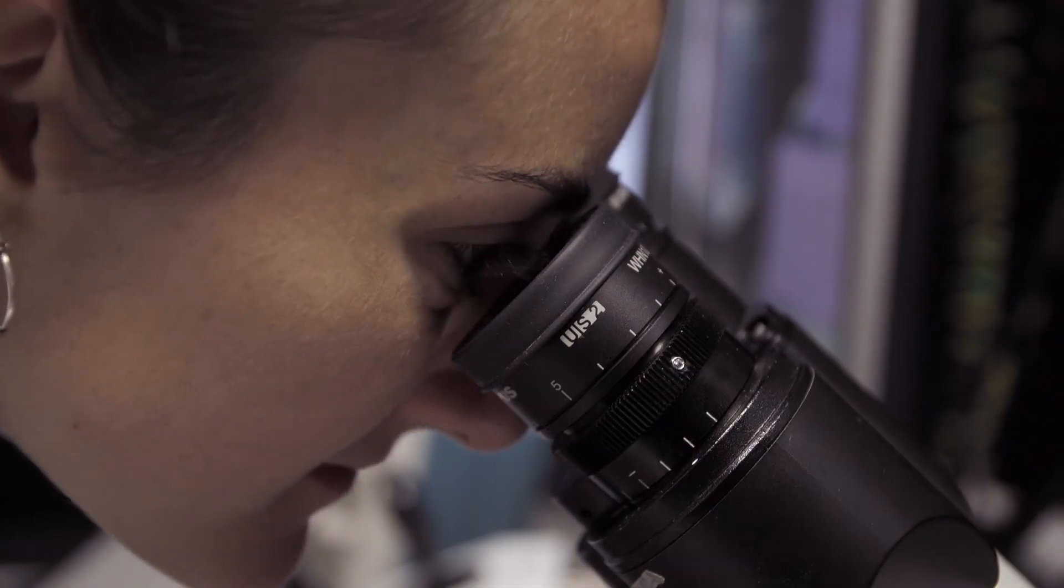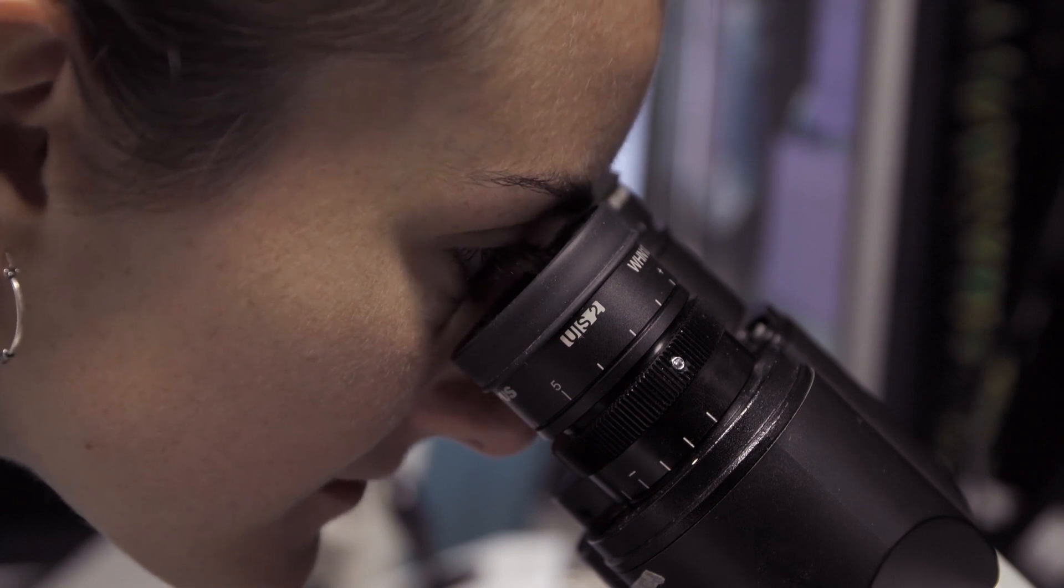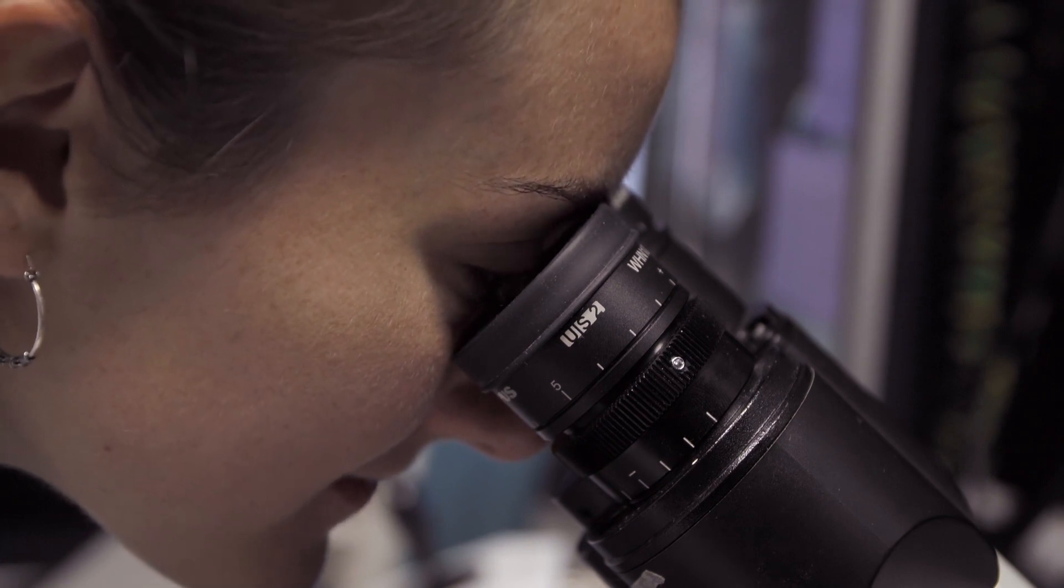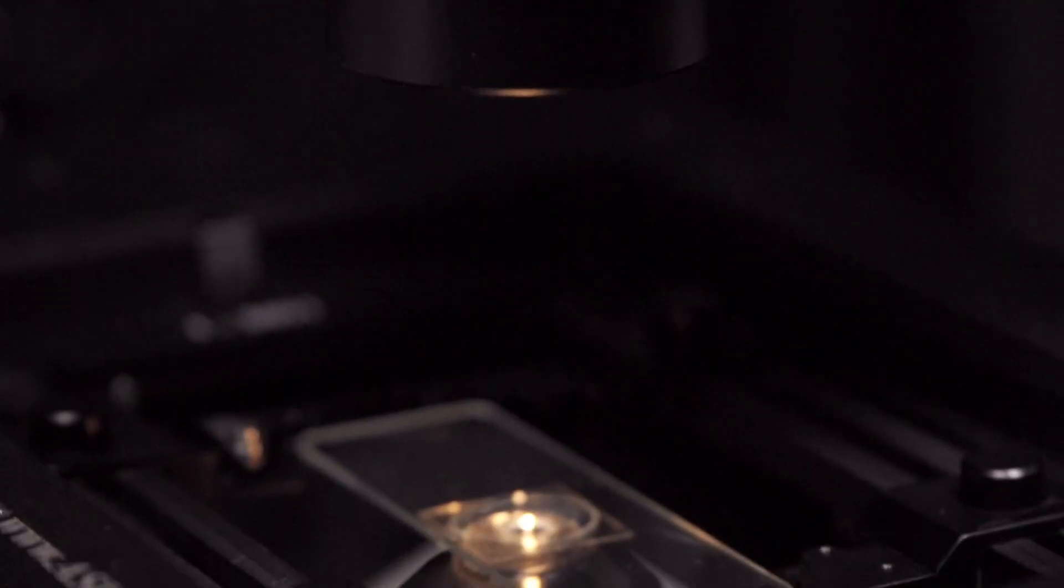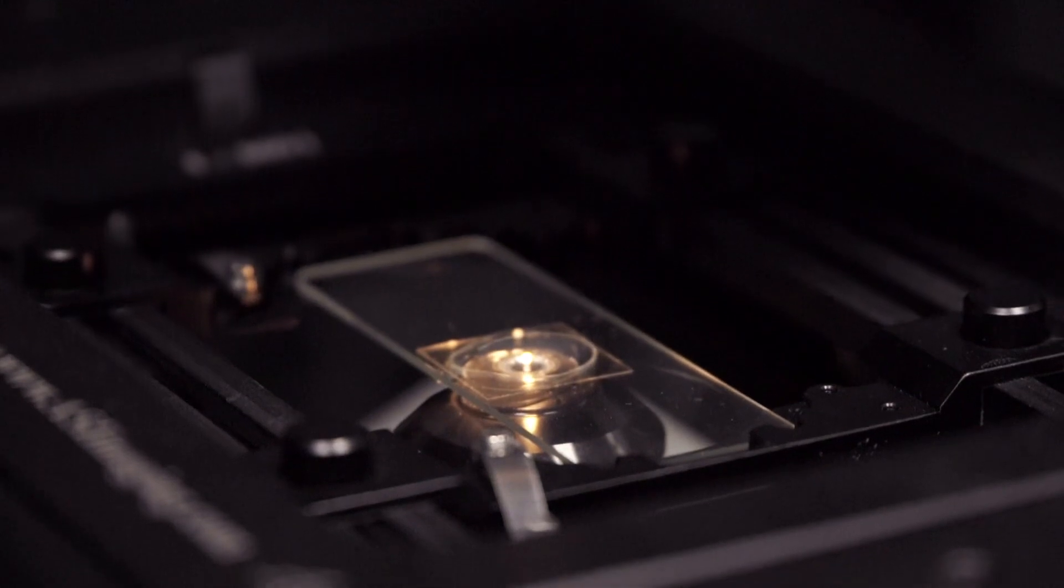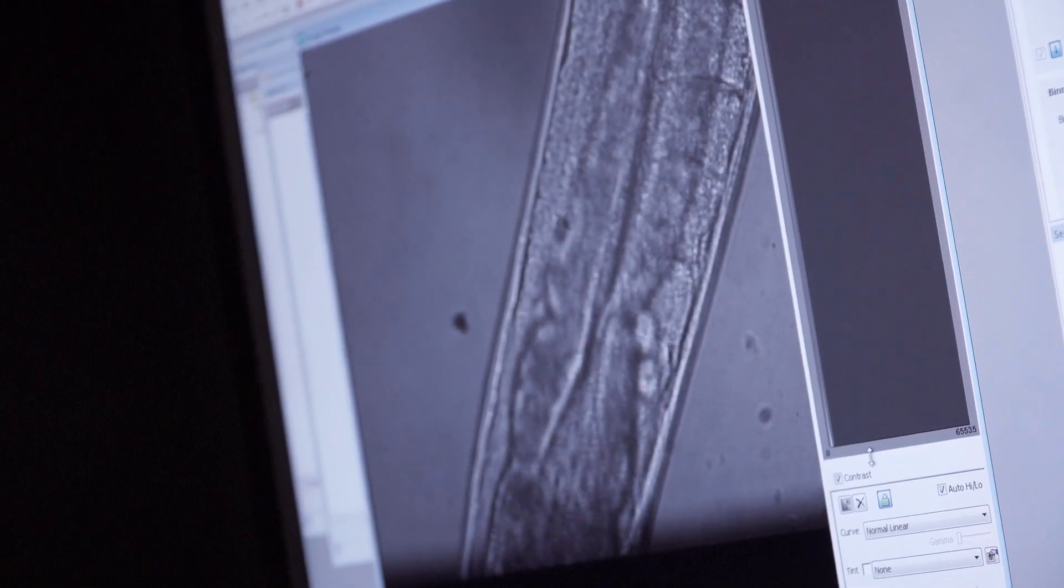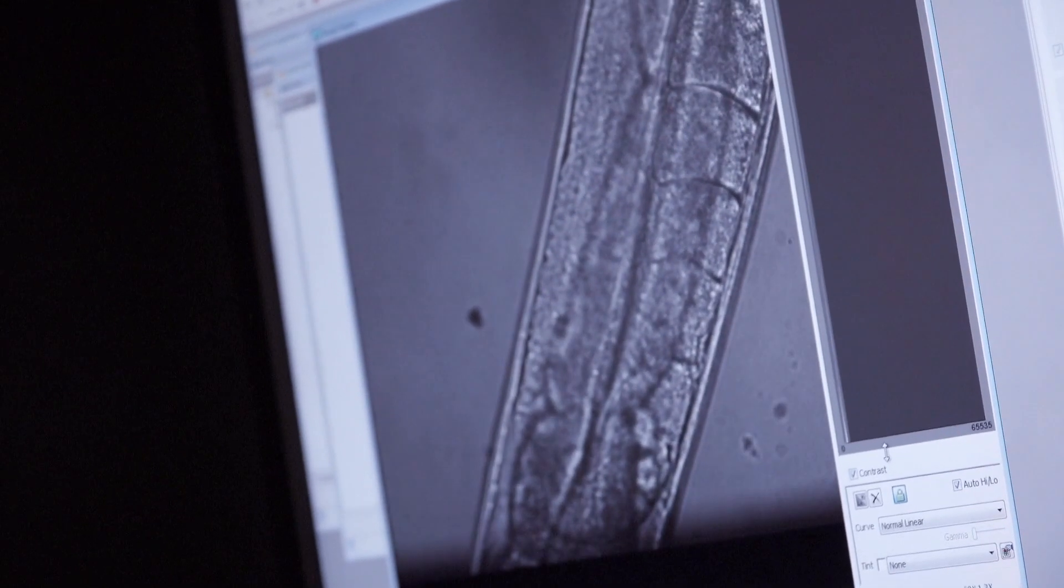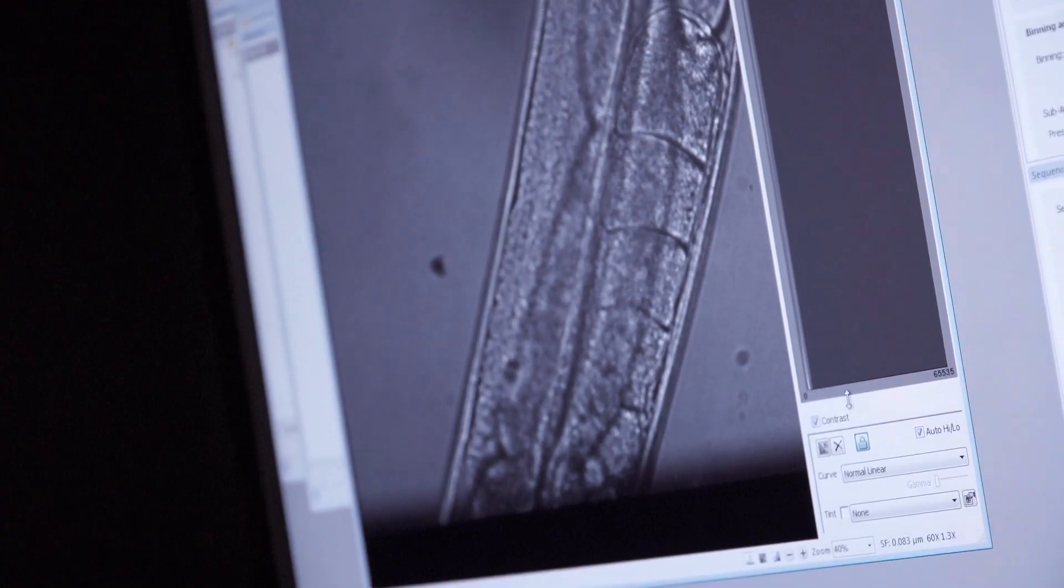Having super resolution microscopy really allows us to see what's going on inside the cell and the advances just allow us to understand the mechanisms a lot better. Once you understand the mechanisms you can start to target drugs at a specific pathway or try to help the cell combat these aggregates, and eventually we hope to find something that will cure Parkinson's.